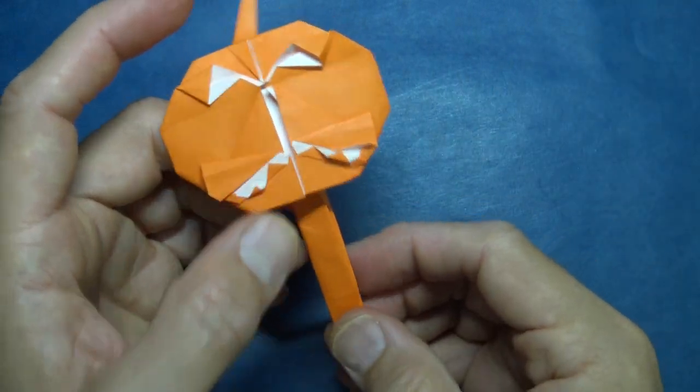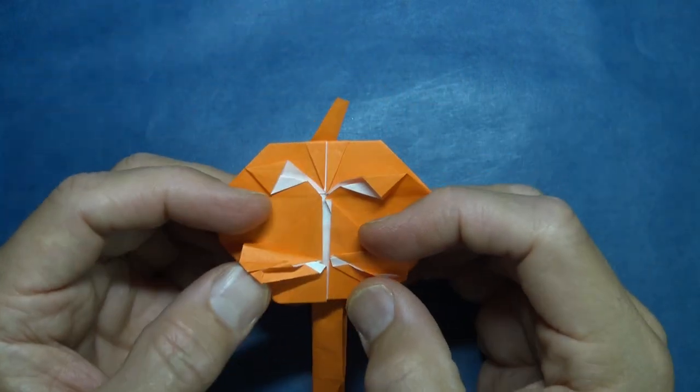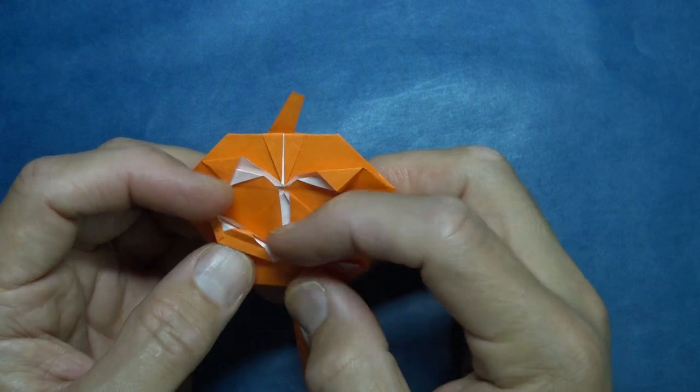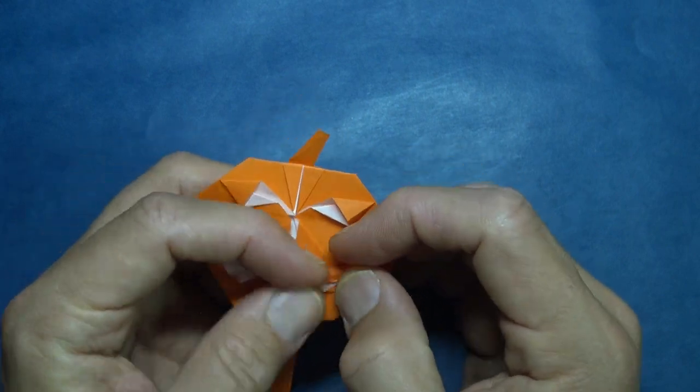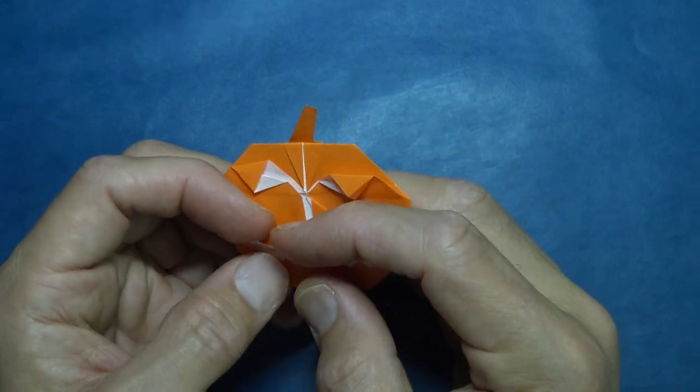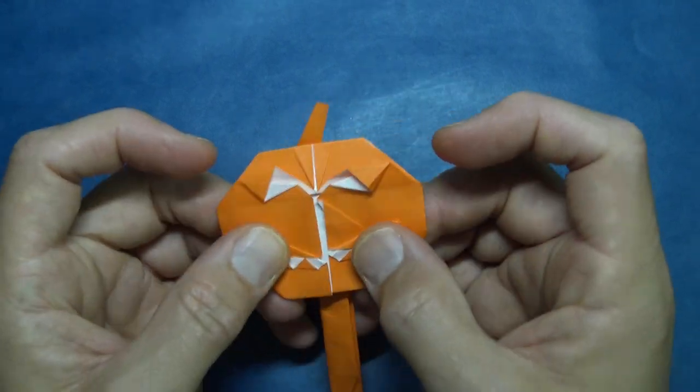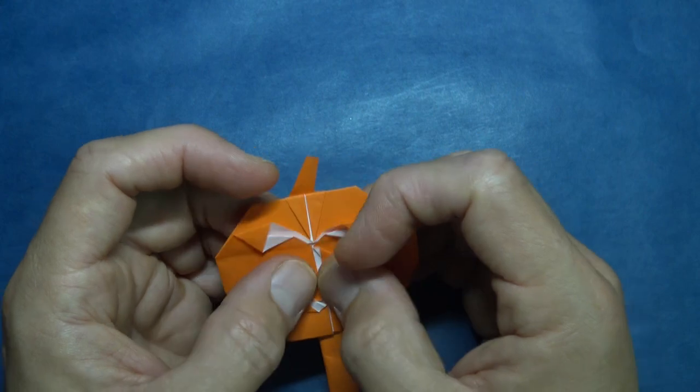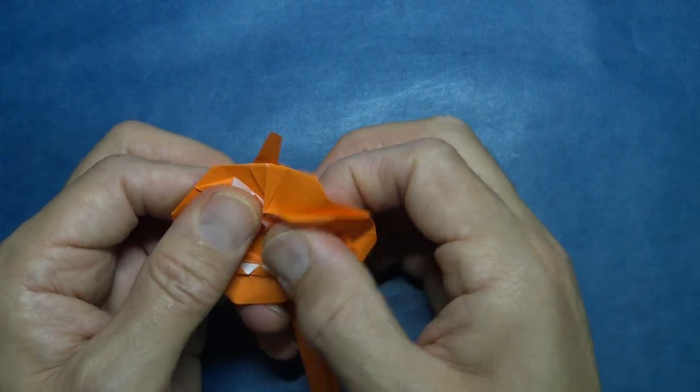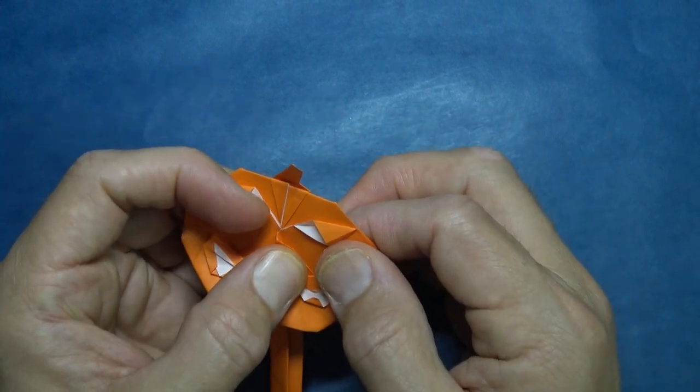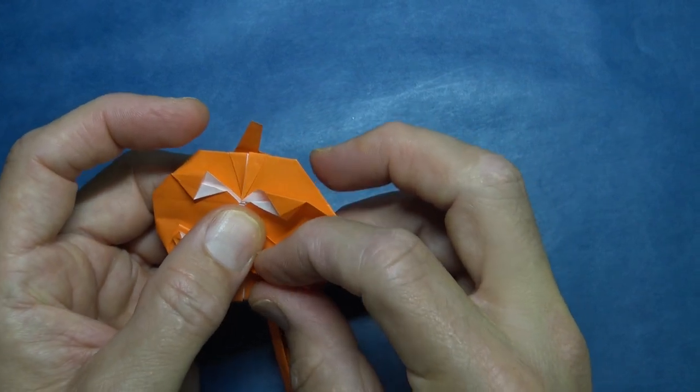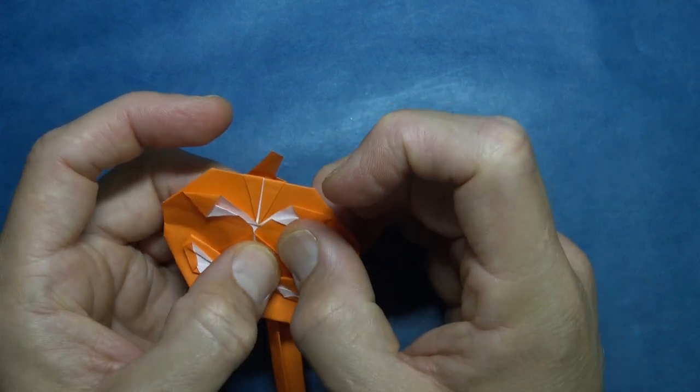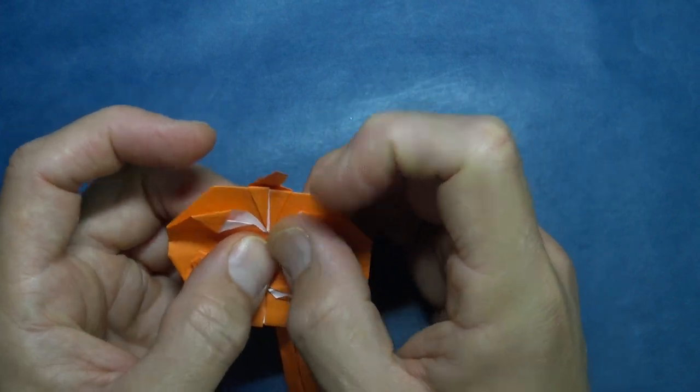So here we have a jack-o-lantern on a popsicle stick, and we can make it happier, like that. Oh, and we want to make a nose. I'll first try to push these edges together if you can, so that you don't see the white because that kind of looks bad. Okay, so if you want a nose, by the way this is optional, so if this is too hard just skip the nose, no problem.